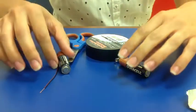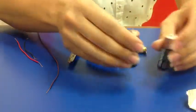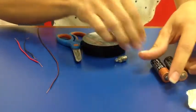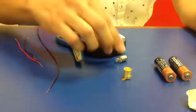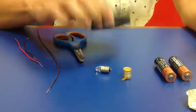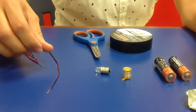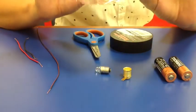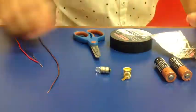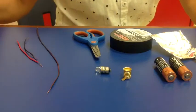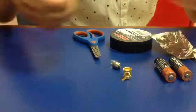First of all, you will need two AA batteries, a light bulb holder, a bulb, electrical tape, scissors, two scraps of aluminum foil, tape, and three cables.